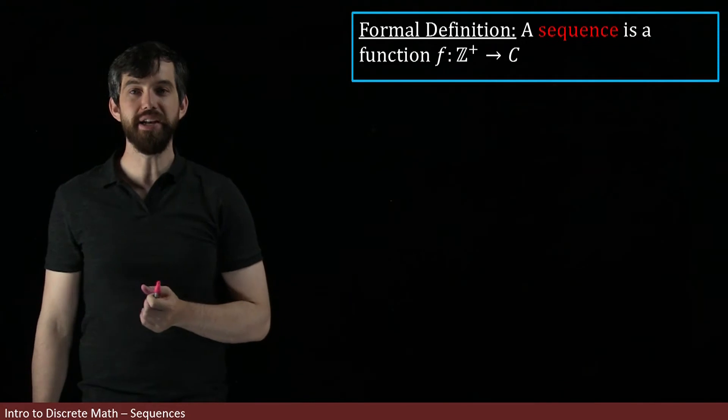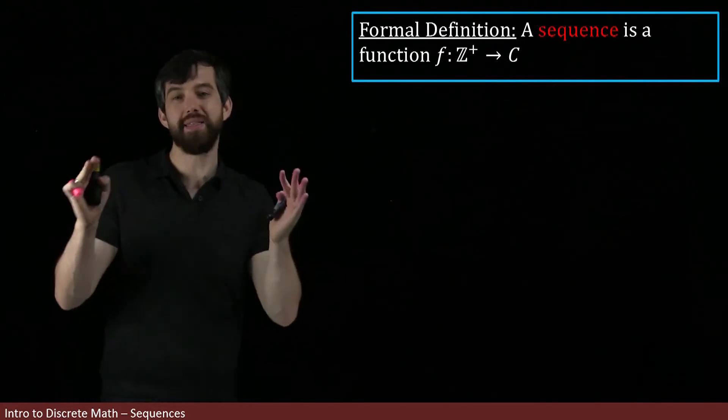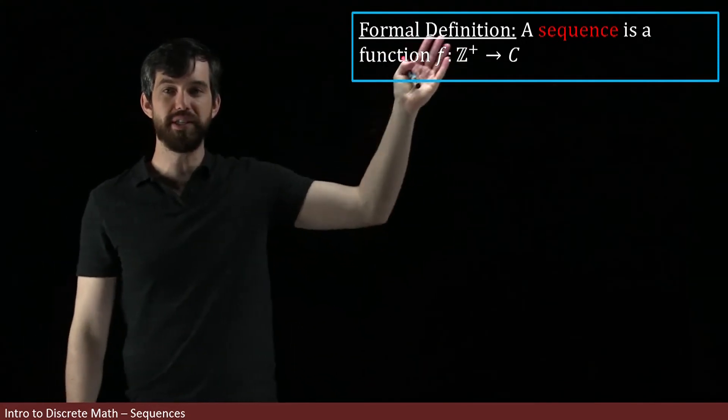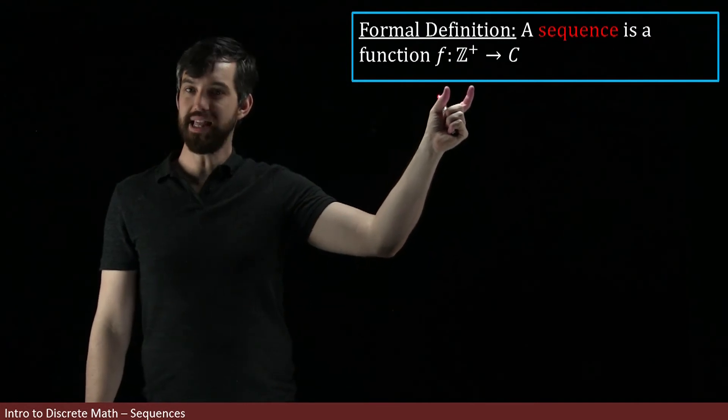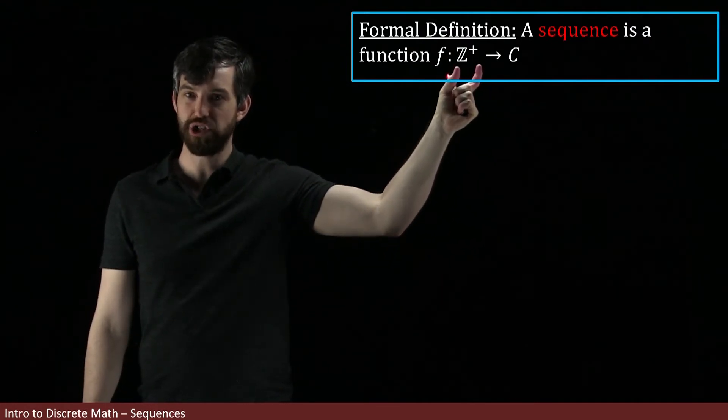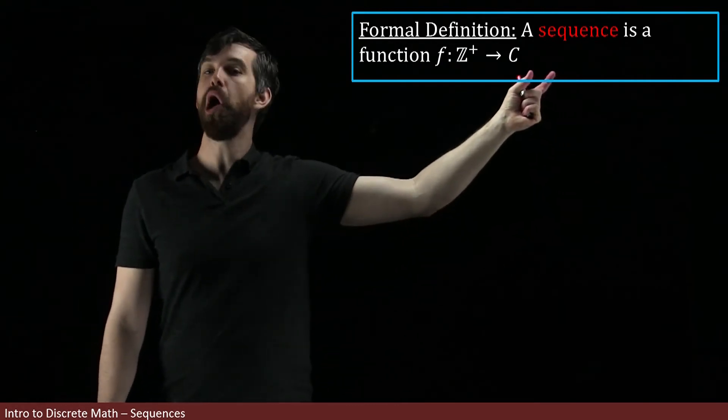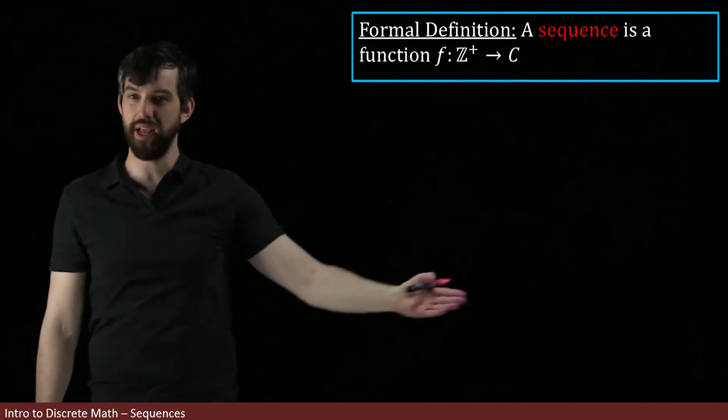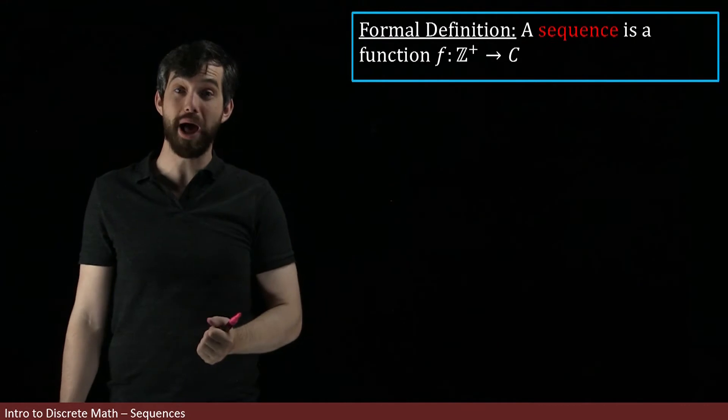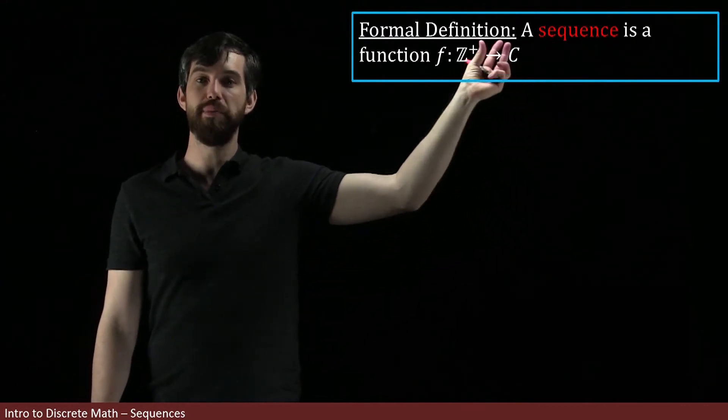Or in other words, I'm going to say, this is my formal, mathematically precise definition: a sequence is a function where I'm taking things from the positive integers—that was the 1, 2, 3, 4—and I'm going to some codomain that we haven't specified. In the other example, it looked like it was integers as well, but it's going to be some codomain.